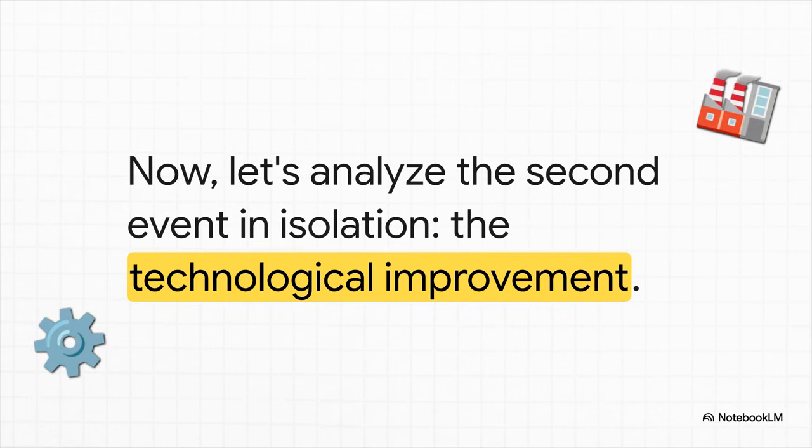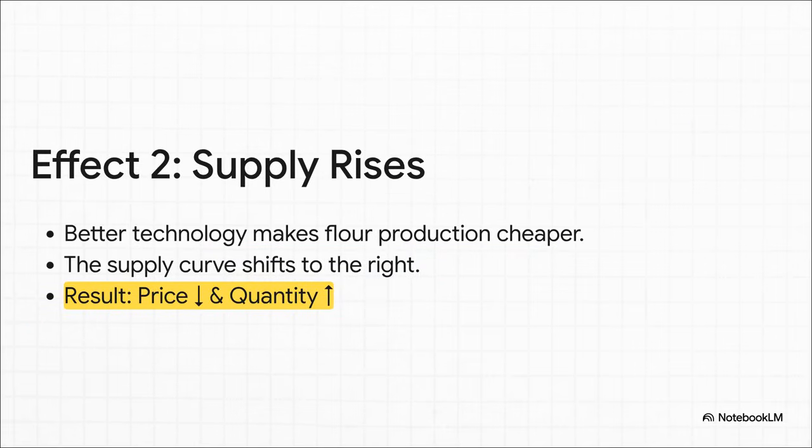Alright, we've got part one down. Let's hit the reset button. Now we're going to totally forget about incomes for a second and just focus on that cool new production technology. Better tech means producers can make way more flour for less money. This is a classic supply boost. For economists, this shifts the supply curve outwards, to the right.